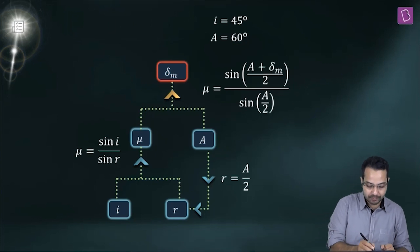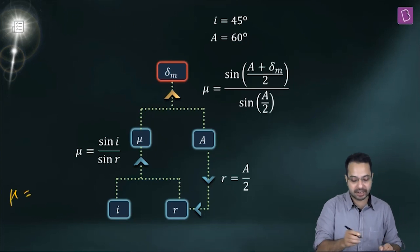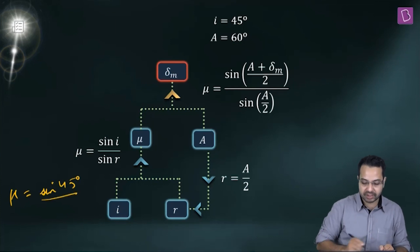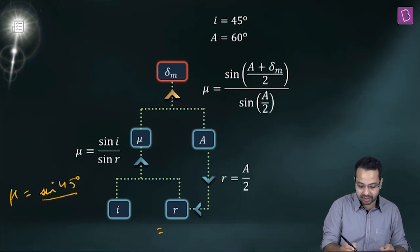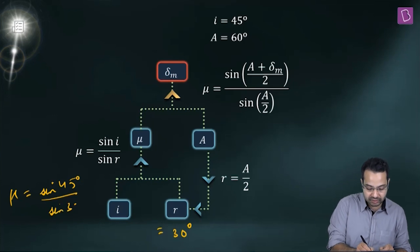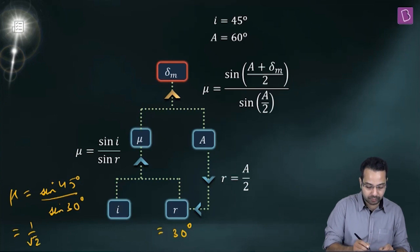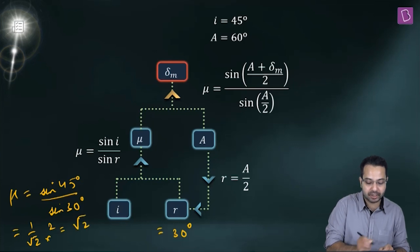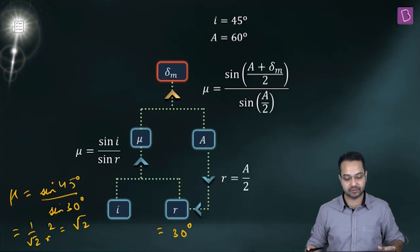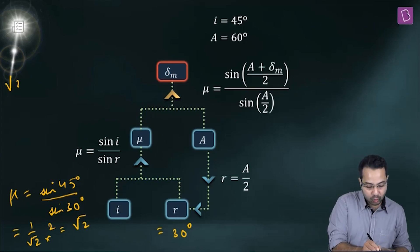So first I write μ = sin(i) / sin(r) = sin(45°) / sin(30°). sin(45°) is 1/√2 and sin(30°) is 1/2. So this becomes (1/√2) / (1/2) = √2. So μ = √2.